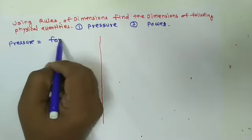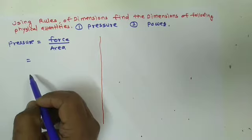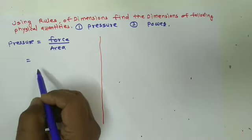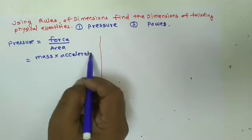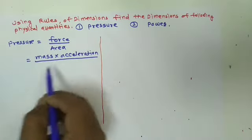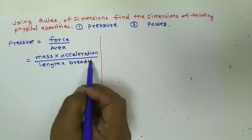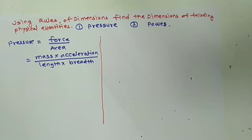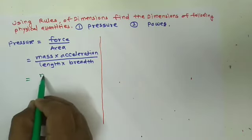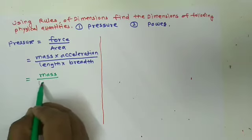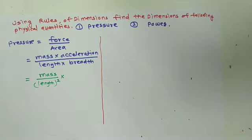So we can write pressure as mass divided by length squared, multiplied by the derived unit of acceleration. Acceleration's formula will be velocity divided by time. Velocity is a derived quantity having a derived unit, so we can express velocity as distance upon time — distance is measured as length.